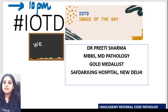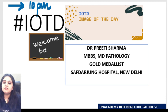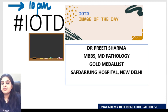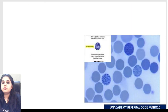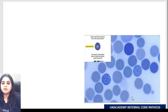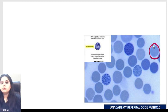Hi everyone, very good evening. Welcome to the next IOTD - Image of the Day, the daily ritual at 10 PM. Today the image we have - I had told you yesterday we will be talking about an image from hematology. This is what we have in front of us. It looks very bluish and we are dealing with a cell population that doesn't have a nucleus - they are red blood cells, enucleated red blood cells.